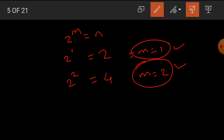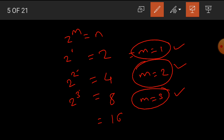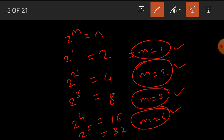If we have 8 input lines then we require 2 raised to 3, that means m is equal to 3, so three select input lines. If we want to design a 16-to-1 multiplexer, then we require 2 raised to 4, that means m equal to 4, so four select lines. If the data input value is 32, then we require 2 raised to 5, that means m equal to 5, so five select lines.